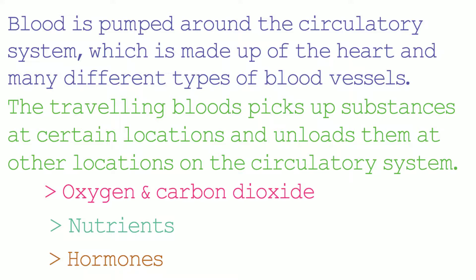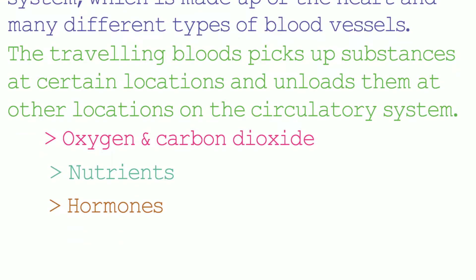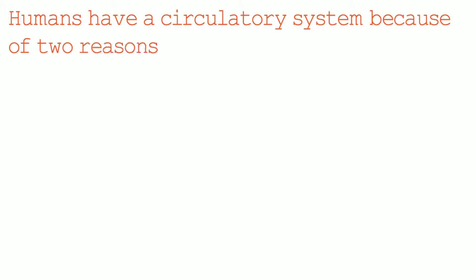That's a short introduction to what a circulatory system is. But why do humans actually have a circulatory system? Humans have a circulatory system for two different reasons.